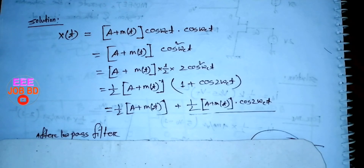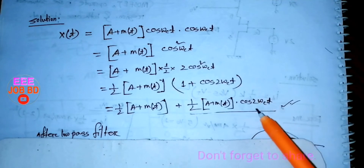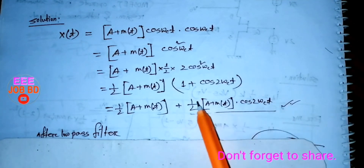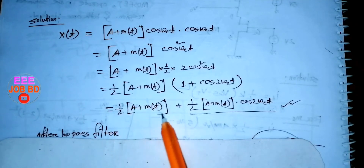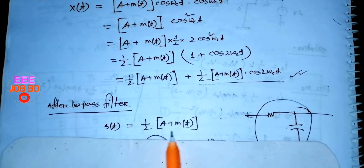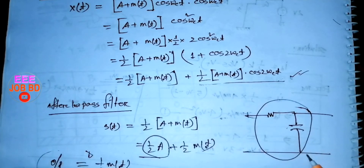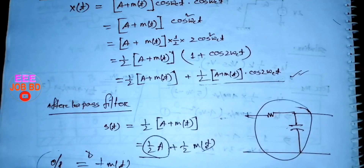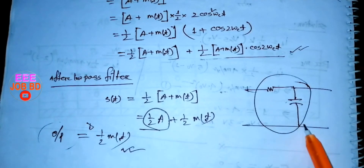This is a bloc. This is DC blocking. Using the DC blocking bloc, we can get the output from this stage.